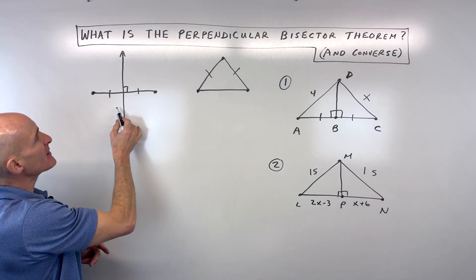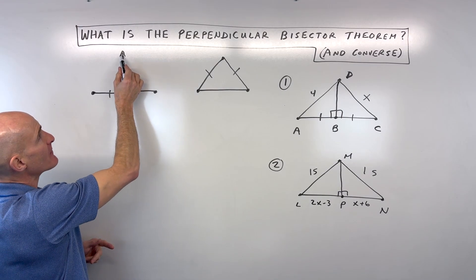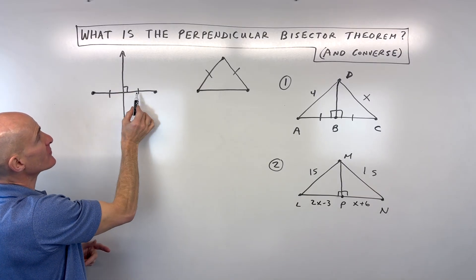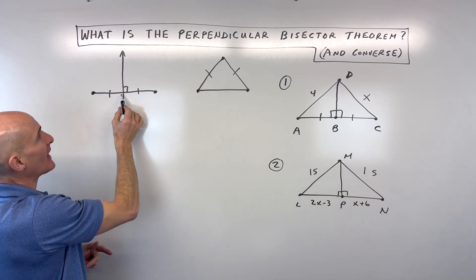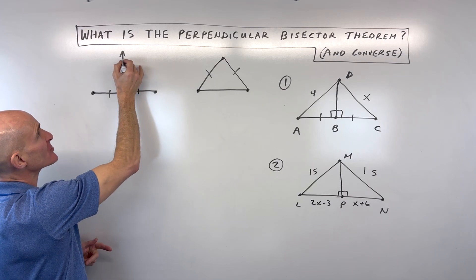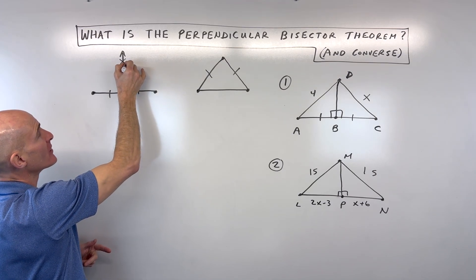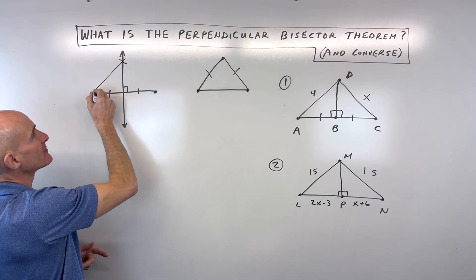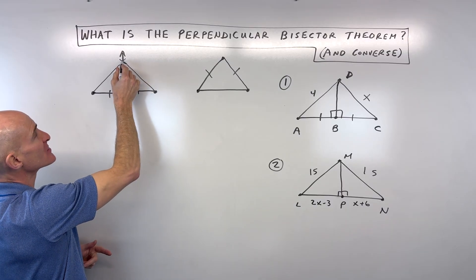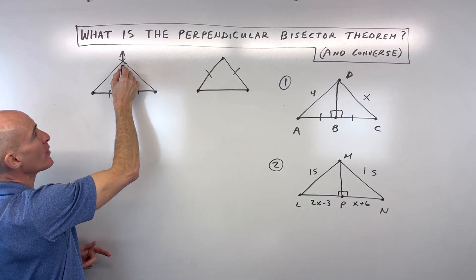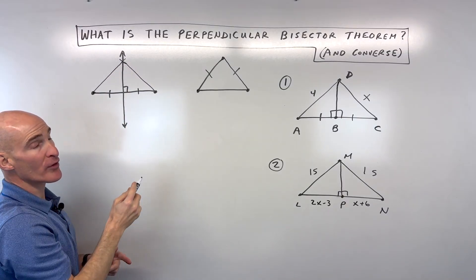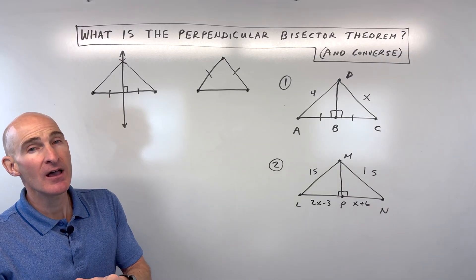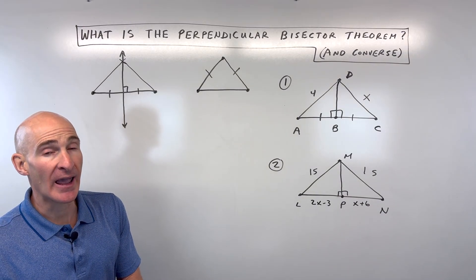What the perpendicular bisector theorem tells us is: if I pick a point anywhere along this perpendicular bisector of a segment, what do I know about the distance from that point to both endpoints of the segment? They're going to be congruent.